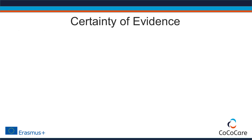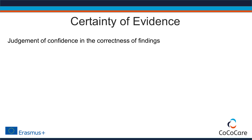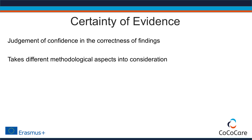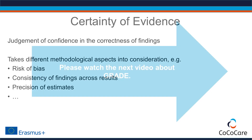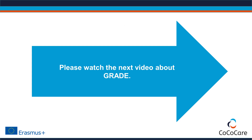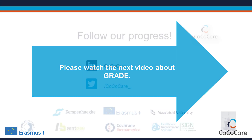Synthesizing the evidence in a systematic review also means that investigators provide an assessment of the certainty of evidence — that is, their judgment of how much confidence they have in the correctness of findings. To assess the certainty of evidence, they take different methodological aspects into consideration, such as risk of bias, consistency of findings across results, the precision of estimates, and others. In the next video, we will explore assessing the certainty of evidence using GRADE.